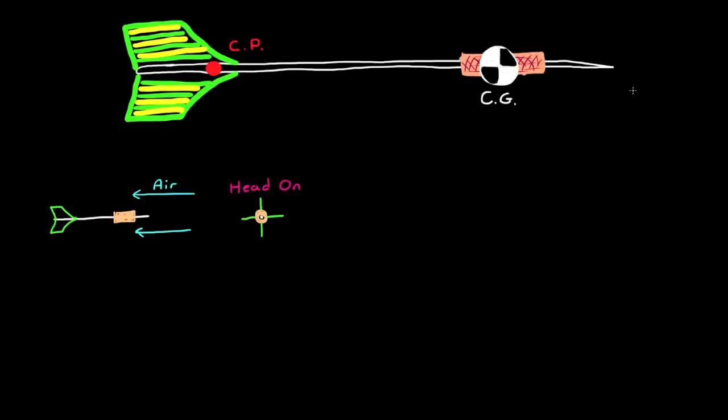You can visualize this easier by looking at the dart head on. You can see that both the dart's shaft and the flights on the aft end are both aligned with the air and don't produce any torque about the center of gravity. But what if the dart is disturbed off its equilibrium flight path?